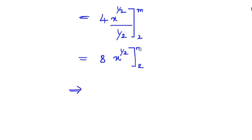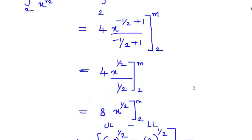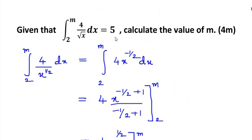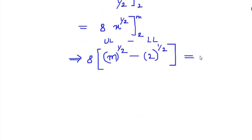The next thing we need to do is substitute the upper limit and the lower limit in this place of x. We are going to write it as 8 put a bracket, now in place of x first put the upper limit so m to the power of half, minus now put 2 in place of x, 2 to the power of half. It's always upper limit minus the lower limit, hence the minus sign. This is equated equal to 5 as given in the question.